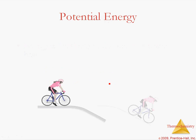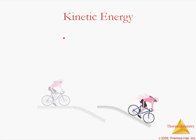We're going to relate this back to potential energy. Potential energy, or PE, has to do with position. A lady that is at the top of the hill has more potential energy than she has when she's going down the hill.